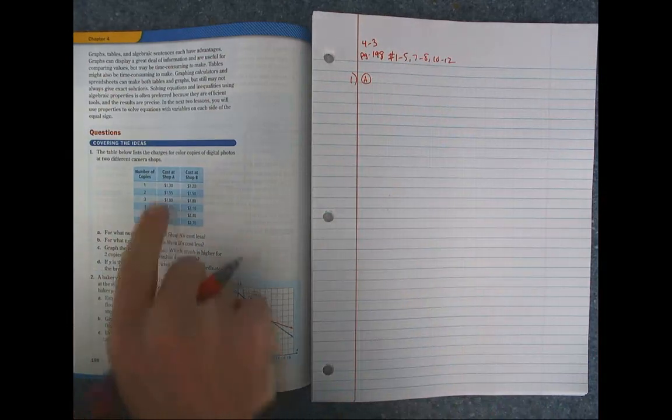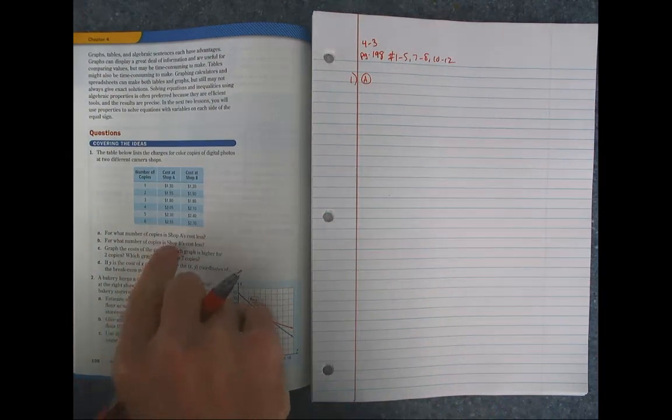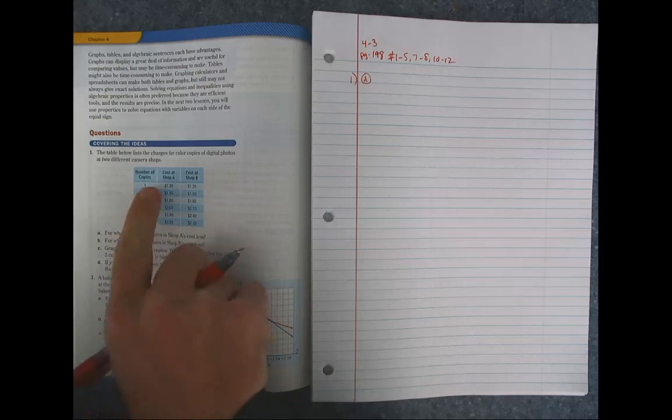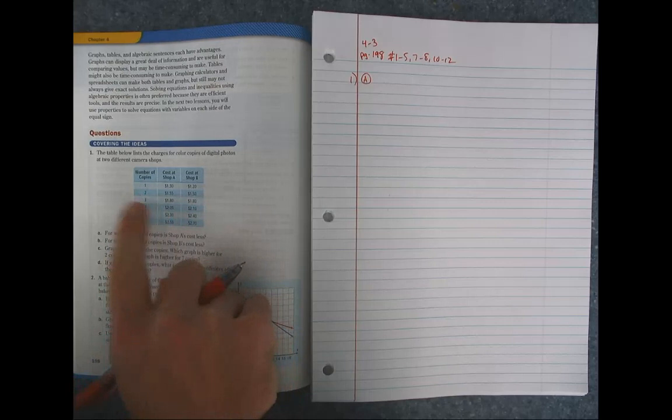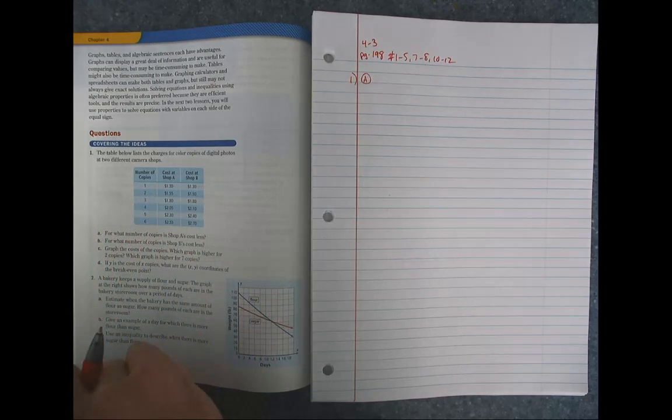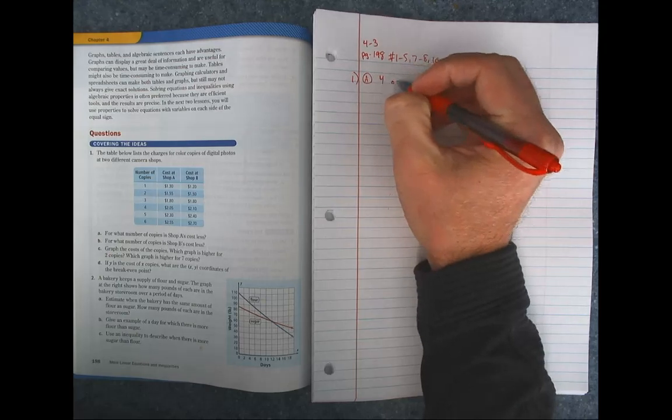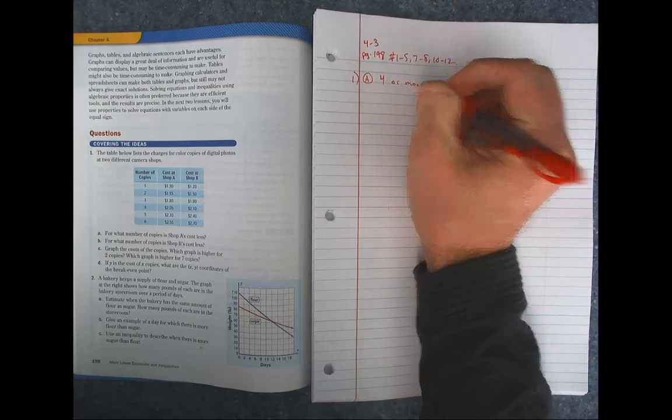Letter A. For what number of copies is shop A's less than shop B's? So it looks more expensive, more expensive, even. And then from four copies, five copies, six copies, from there up, it looks like it is cheaper. So I'm going to say four or more.